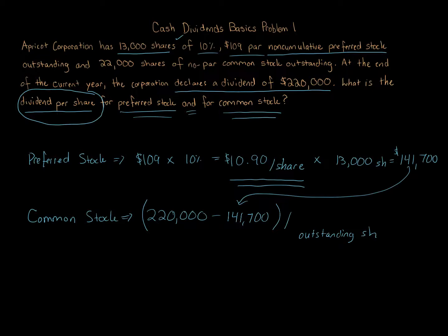Outstanding, not authorized, not issued. We use outstanding shares. The outstanding shares of common stock here, we're told is 22,000. So we take the $220,000 total dividend and subtract away the $141,700 that the preferred shareholders received in total, and divide that by 22,000. We're going to get for common shares, each common share is going to get dividends per share of $3.56.